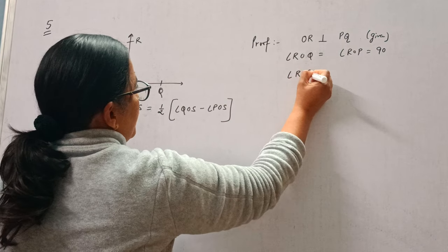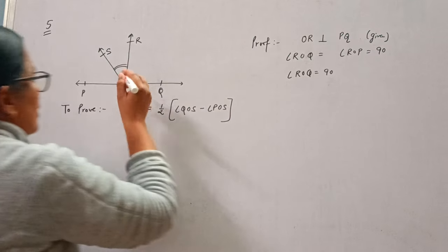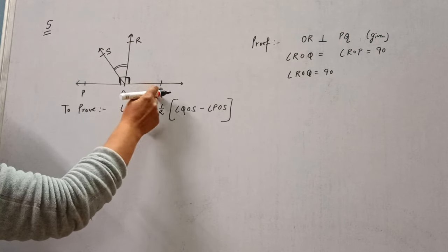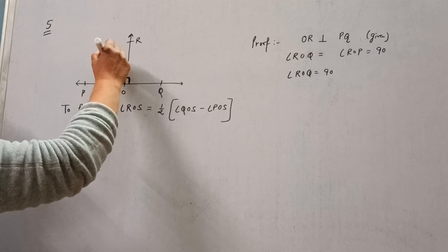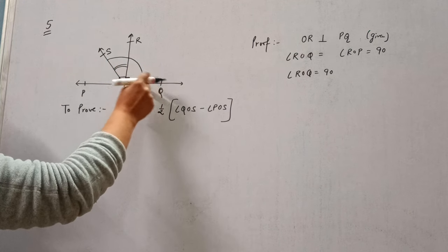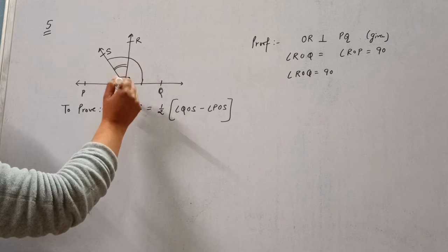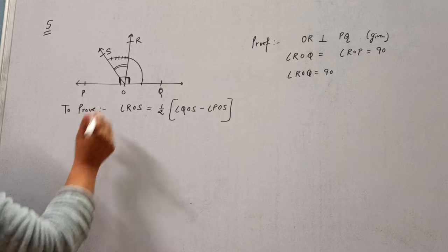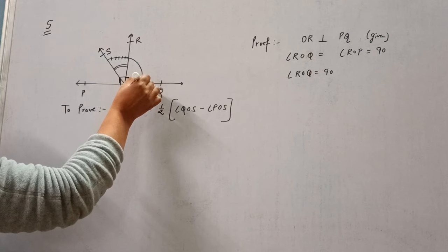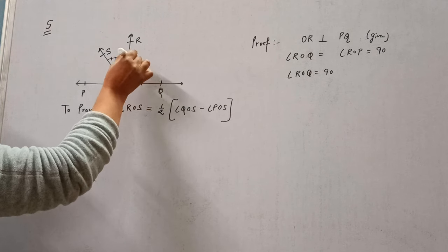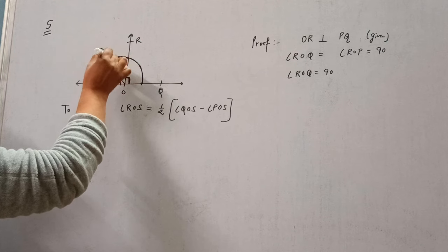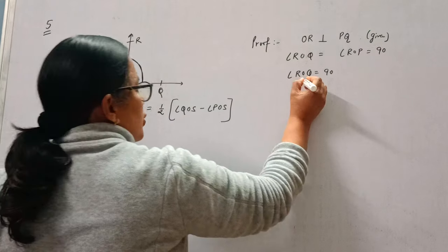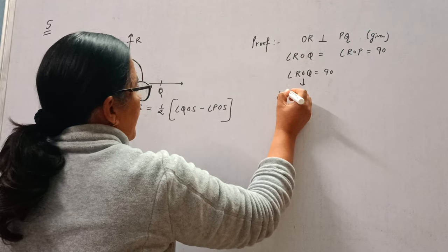all take: If ROQ is 90 degrees, how can we write this angle ROQ? See, we can write it as angle QOS, this whole angle, minus angle ROS. This ROQ can be written as QOS minus ROS.